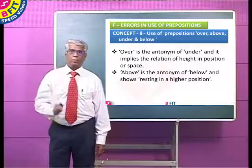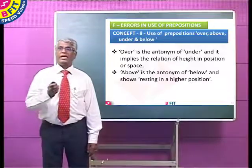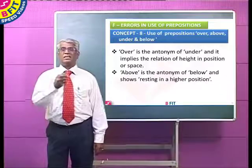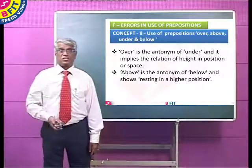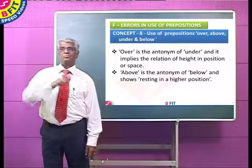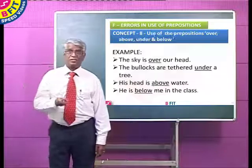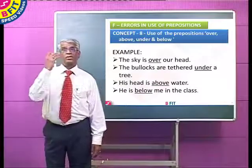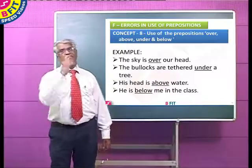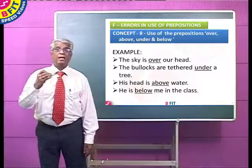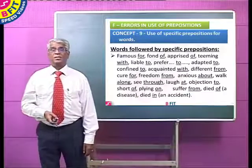Another set: over, above, under and below. 'Over' is the antonym of 'under' — it implies a relation of height in position or space. 'Above' is the antonym of 'below' — it shows resting in a higher position. Examples: the sky is over our head; the bullocks are tethered under the tree; his head is above water; he is below me in the class.